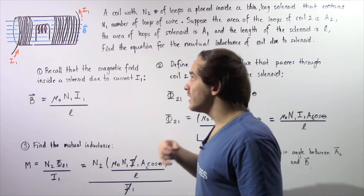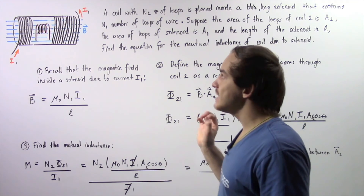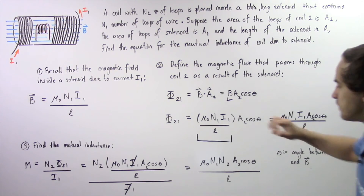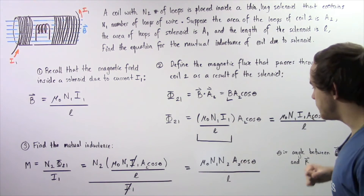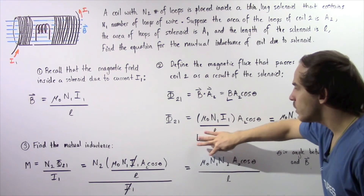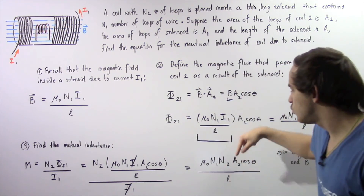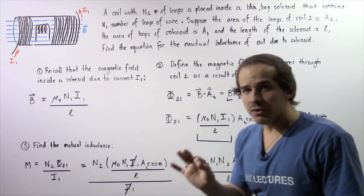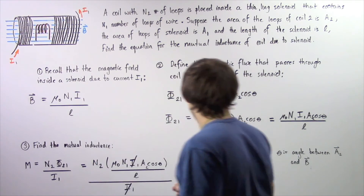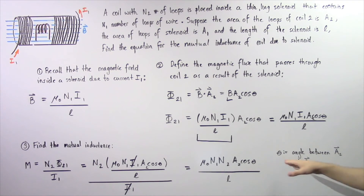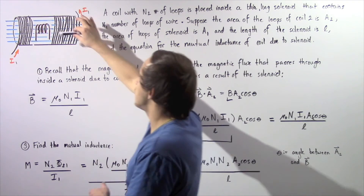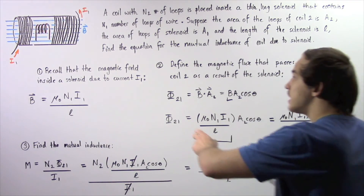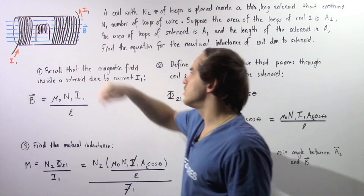The mutual inductance of coil number 2 placed inside the solenoid is given by: M = μ₀ · N1 · N2 · A2 · cosθ / L, where μ₀ is the permeability of free space, N1 is the number of loops in the solenoid, N2 is the number of loops in coil 2, A2 is the area of the loops of coil 2, θ is the angle between the area vector and the magnetic field B, and L is the length of the solenoid. This is the mutual inductance equation for a coil placed inside a solenoid.